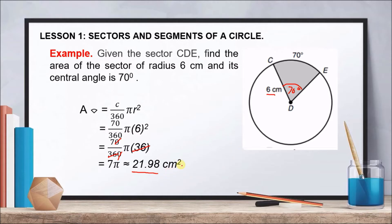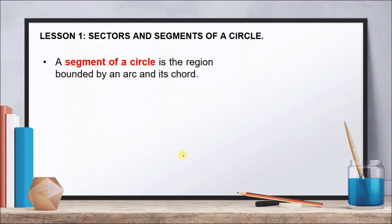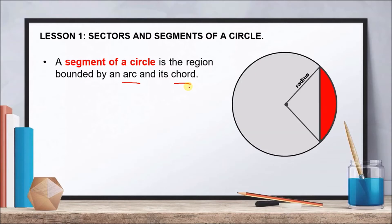Remember that when dealing with area, we always use square units. Moving on to segments — the segment of a circle is a region bounded by an arc and a chord. Unlike a sector, which is bounded by two radii and an arc, a segment uses an arc and a chord.